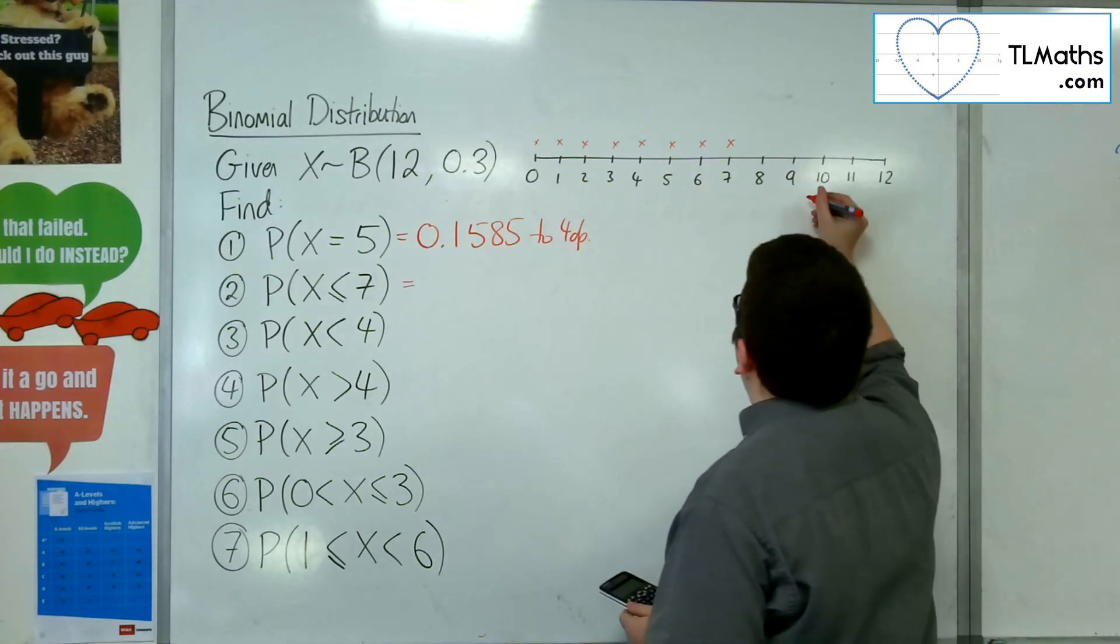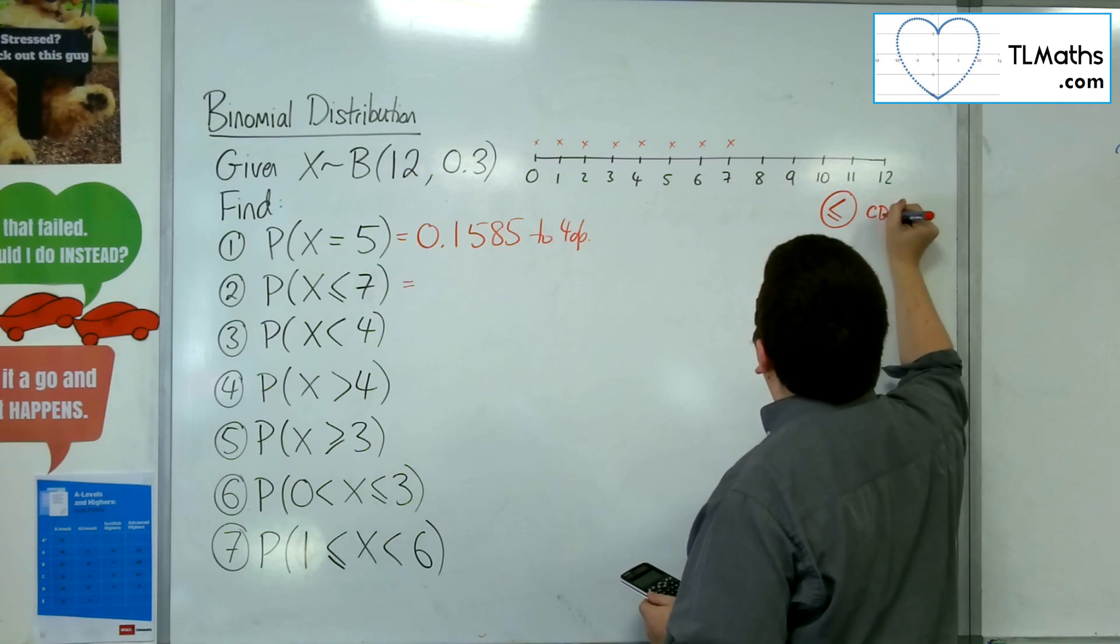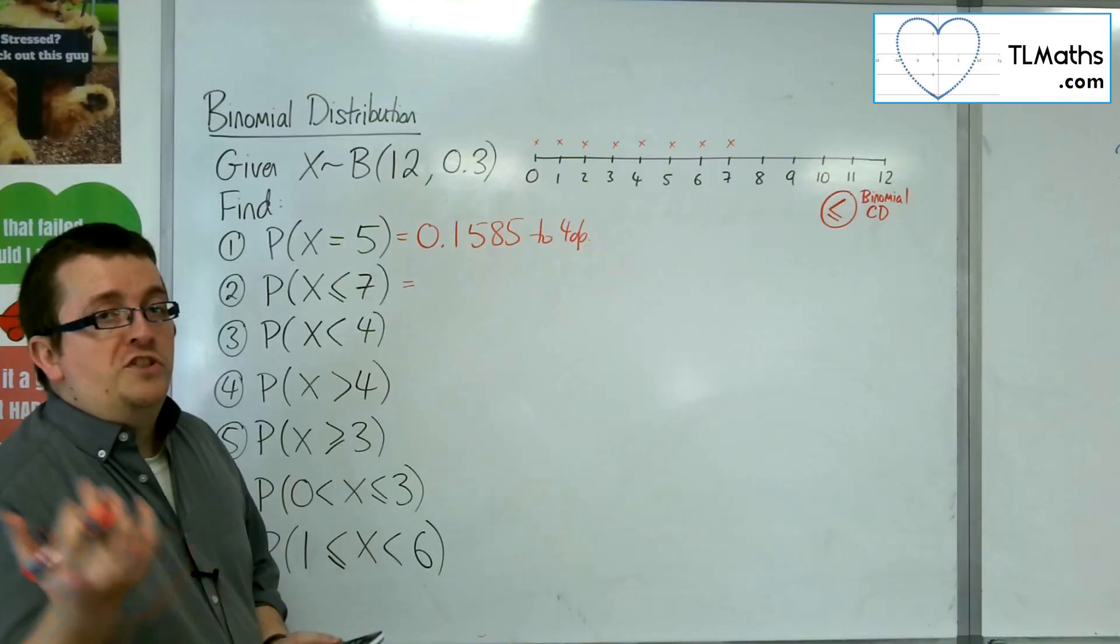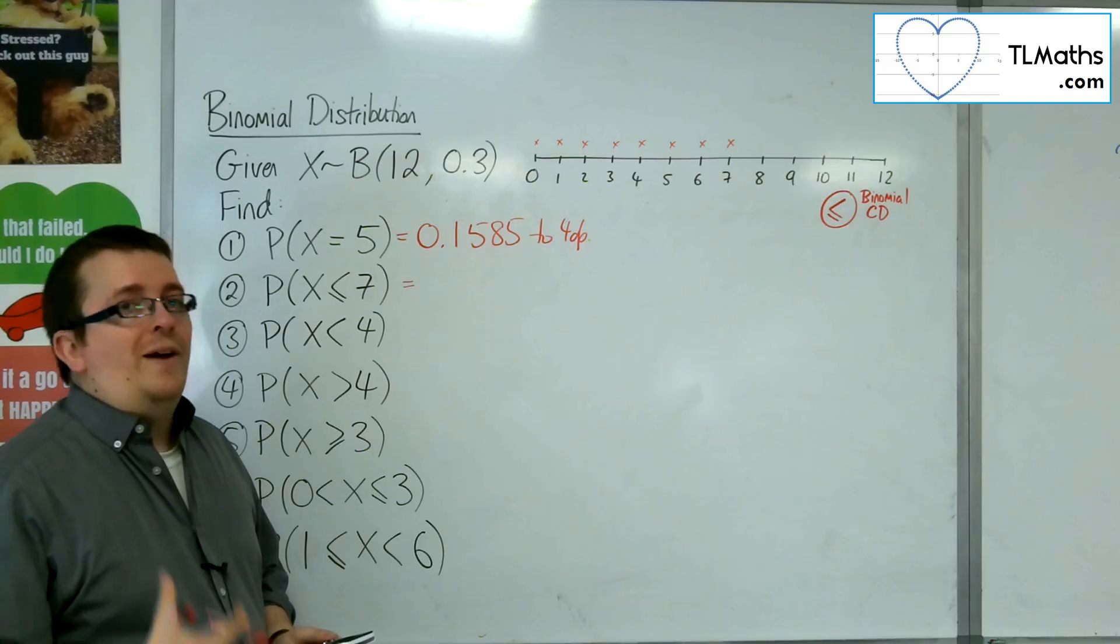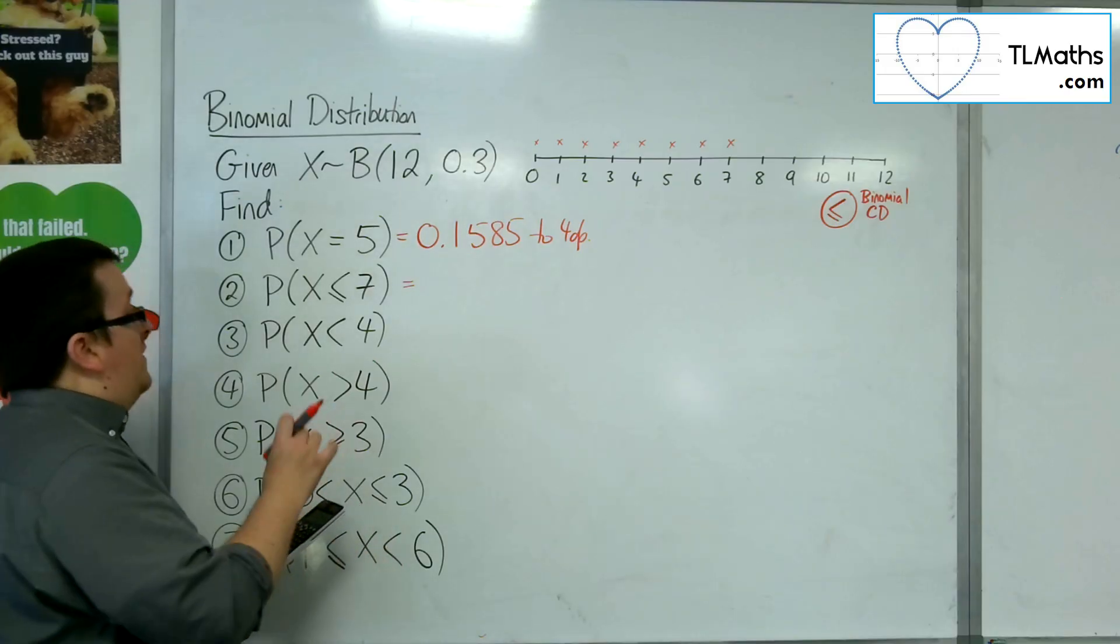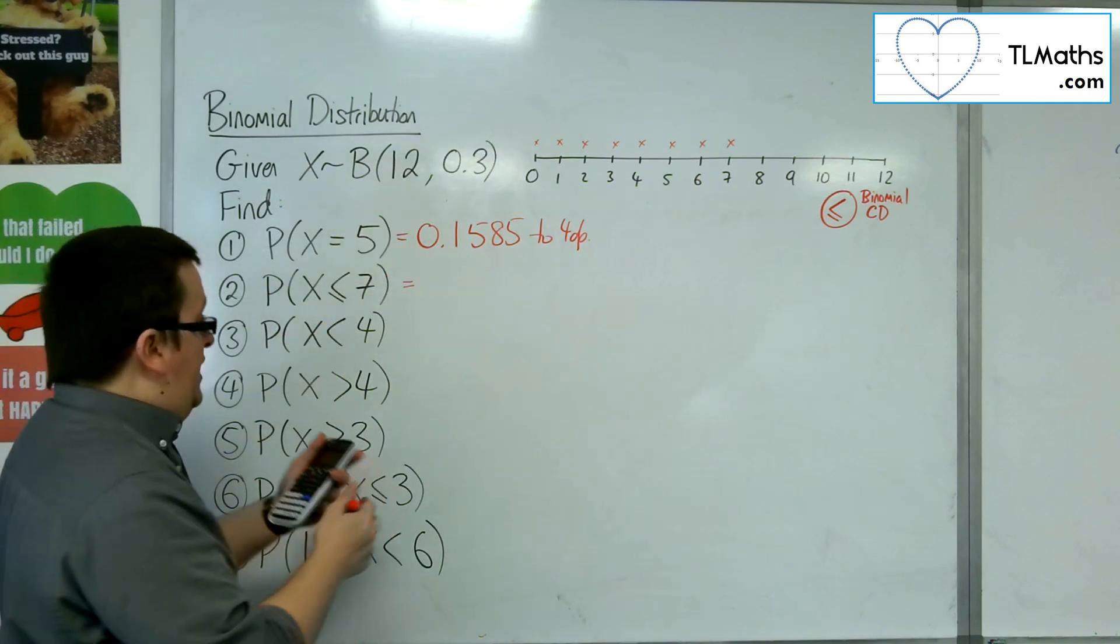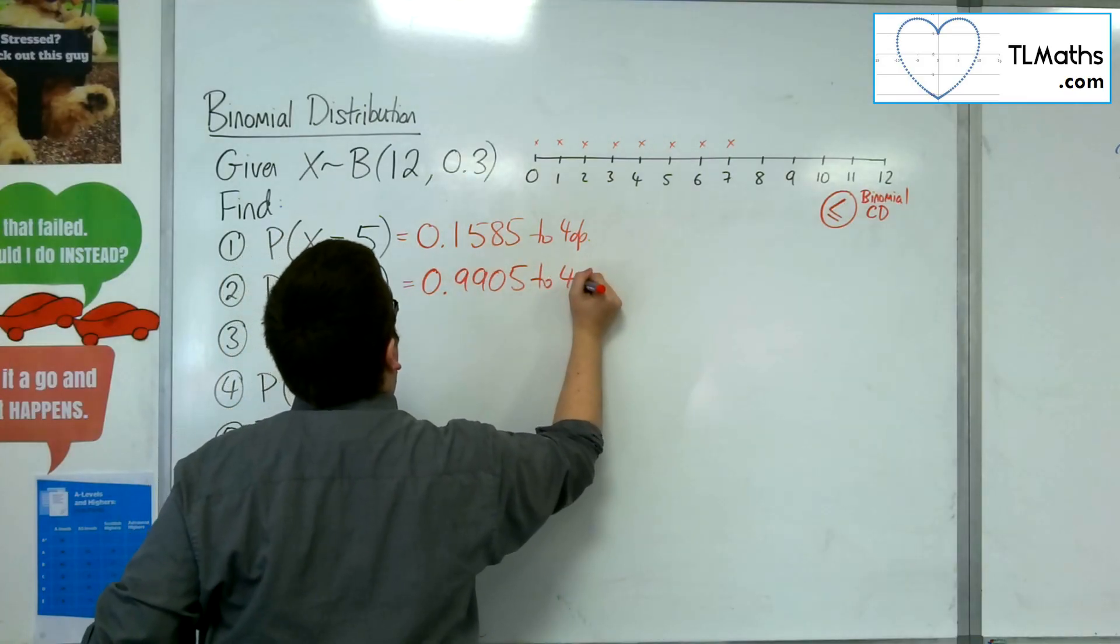Now the binomial CD, be warned, will only find less than or equal to. So it comes with a disclaimer. It only finds you less than or equal to. So any of these questions that aren't just less than or equal to, we're going to need to use our intuition about how we're going to manipulate that answer. So, binomial CD. We want to go into variable again. And now the x in this case is 7. You want less than or equal to 7. n is 12, probability is 0.3. And you get 0.9905 to 4 decimal places.